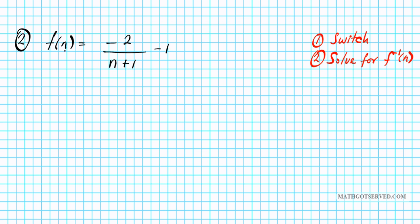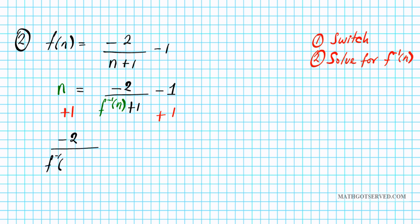Let's carry out the switch first. f of n becomes the input n, which equals negative two over the independent variable, which becomes the inverse f to the negative one of n, plus one, minus one.